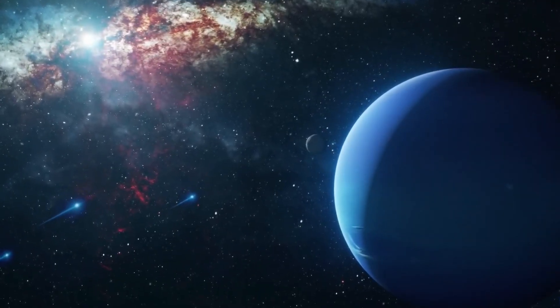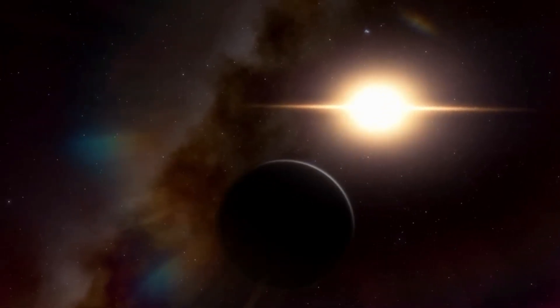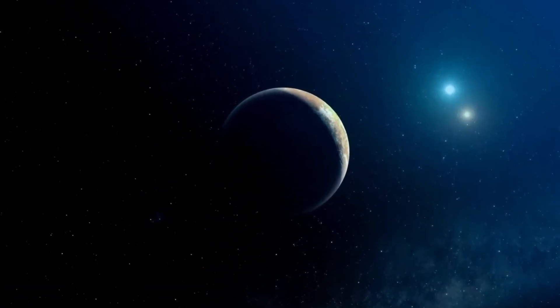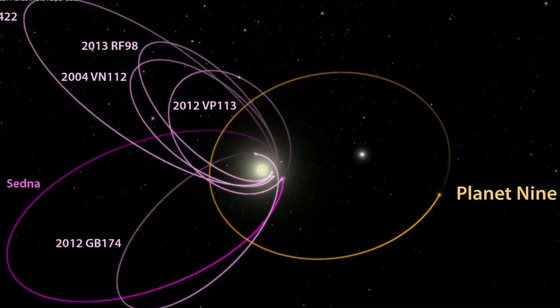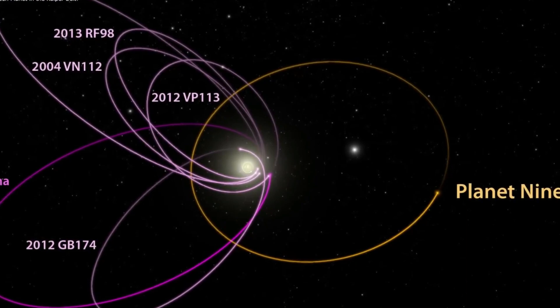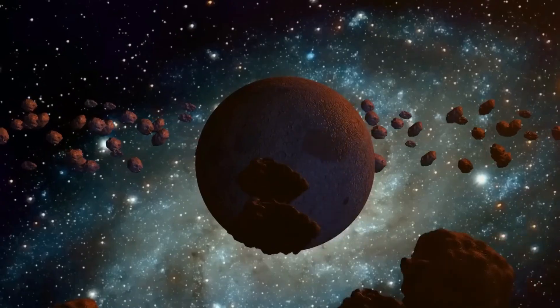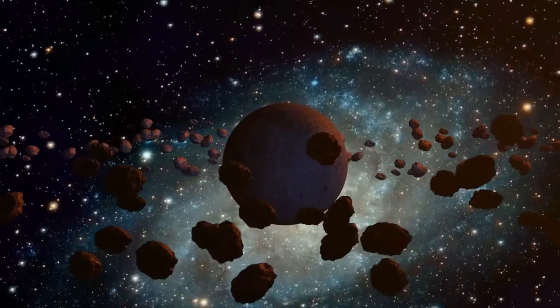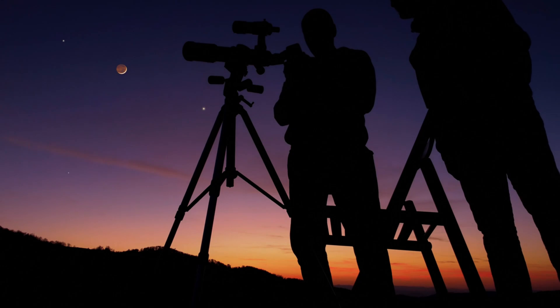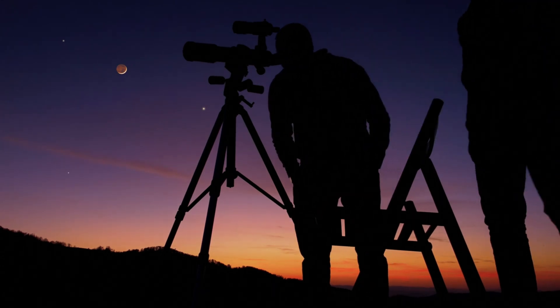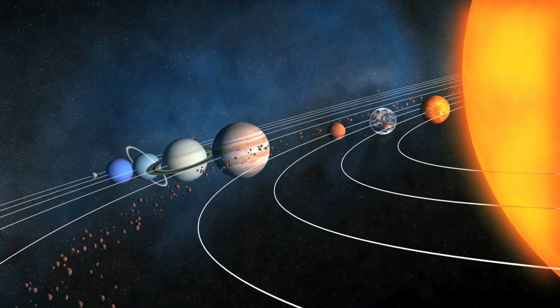But what if Planet 9 is not a planet at all? Some astronomers have speculated that it could be a primordial black hole, a remnant from the early universe that formed soon after the Big Bang. This theory has gained some traction, especially with the observation that black holes have an incredibly strong gravitational pull, which could explain the disturbances we see in the orbits of distant objects. If it turns out that Planet 9 is a black hole, it could have profound implications for our understanding of gravity and space-time, not to mention the possibility of uncovering a hidden relic from the very beginning of the universe.